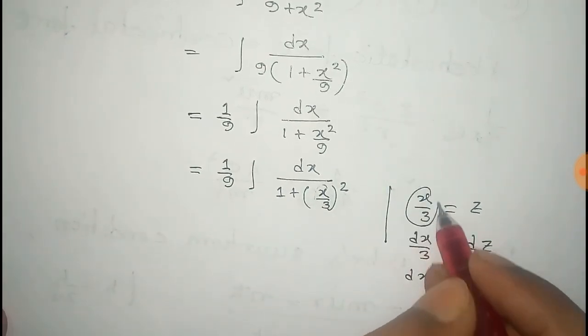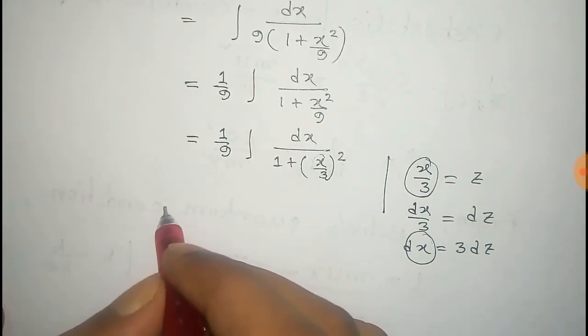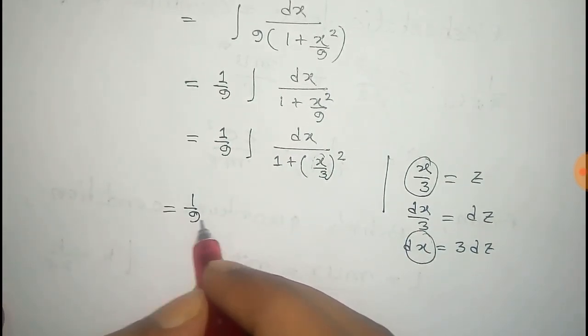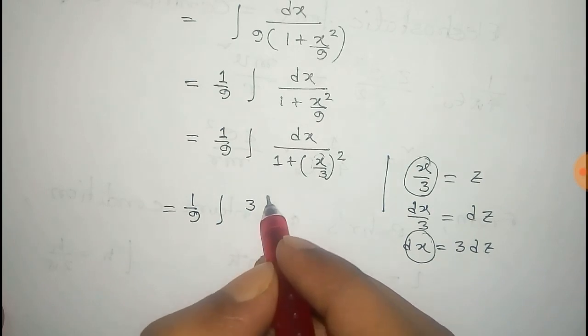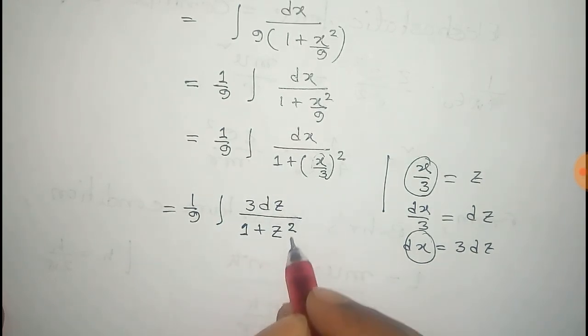Now put the value of x by 3 here and value of dx here. So we get that equals 1 by 9, value of dx that is 3 dz by 1 plus z square.